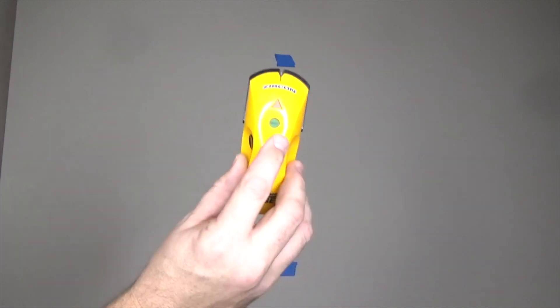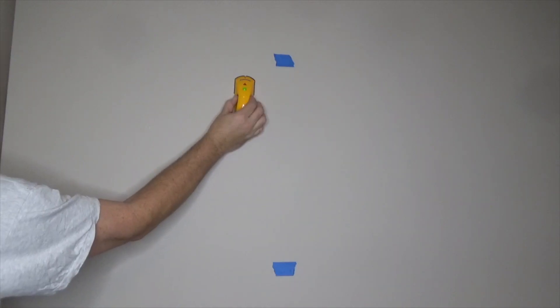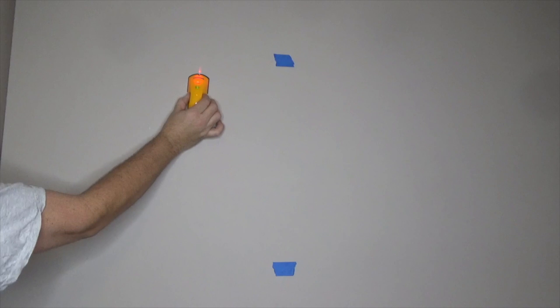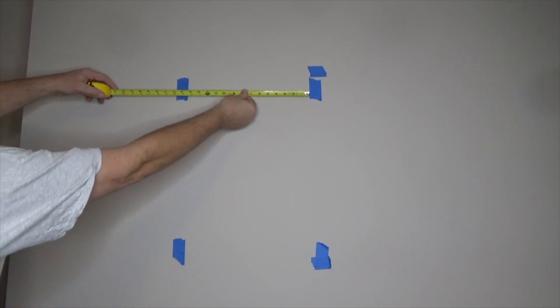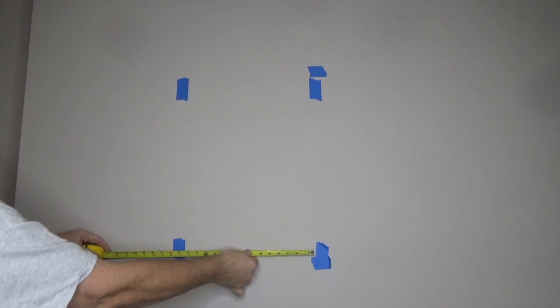Use painter's tape to better visualize the marks, and then use a stud finder to find the studs in the wall. Then mark the edges of these studs using painter's tape. The studs are usually 16 inch on center in most houses. Use a tape measure to double check.